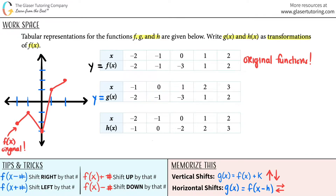So we're now going to do negative 1, negative 2 — starting down here. Then we go 0, negative 1. Then we go 1, negative 3. Then we go 2, 1. And then there should be another one — 3 and 2. Let's connect the dots again. So this is g of x.